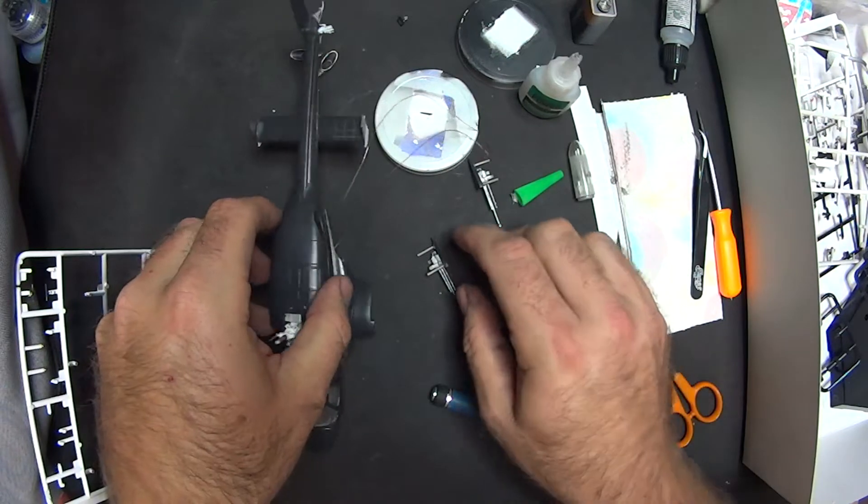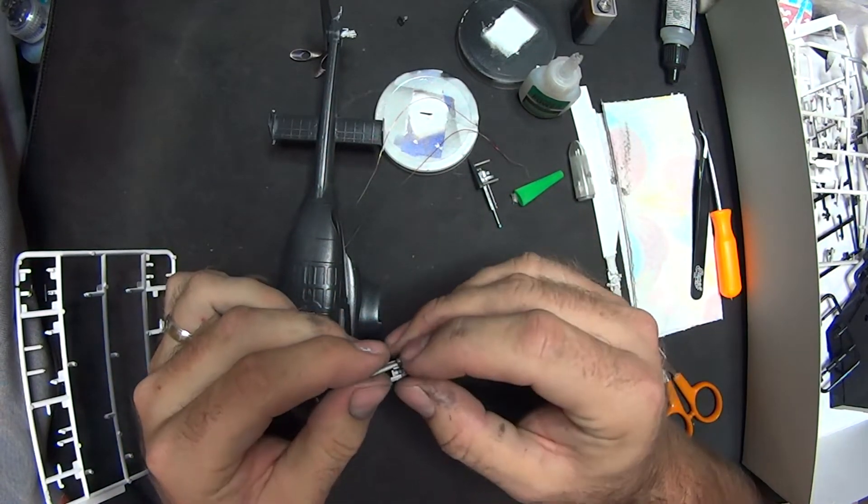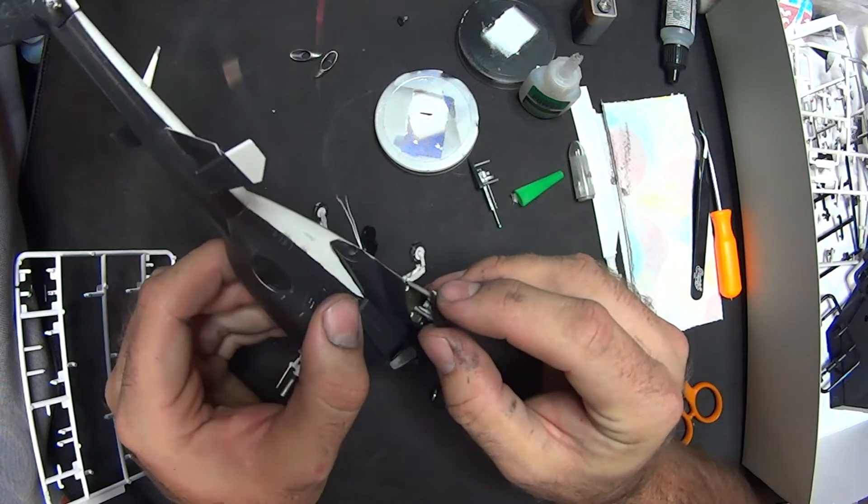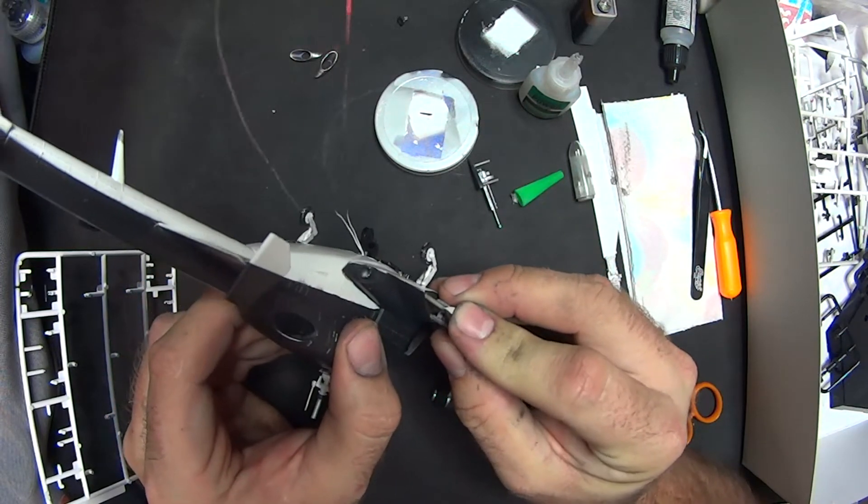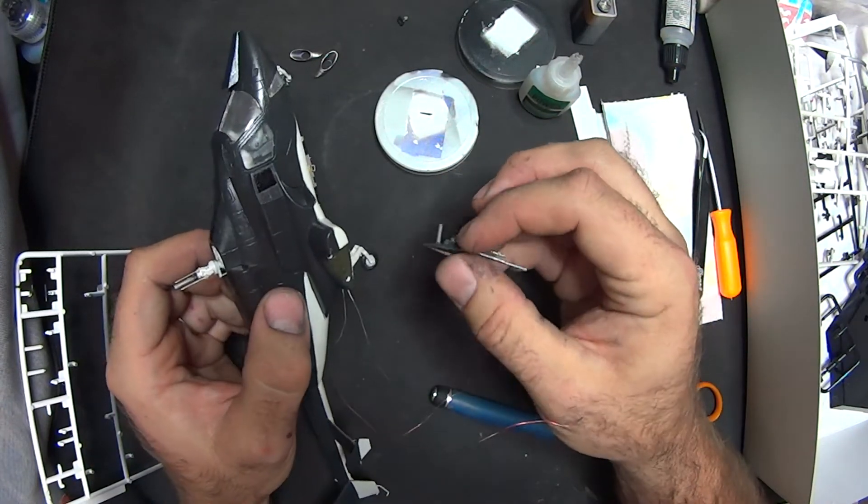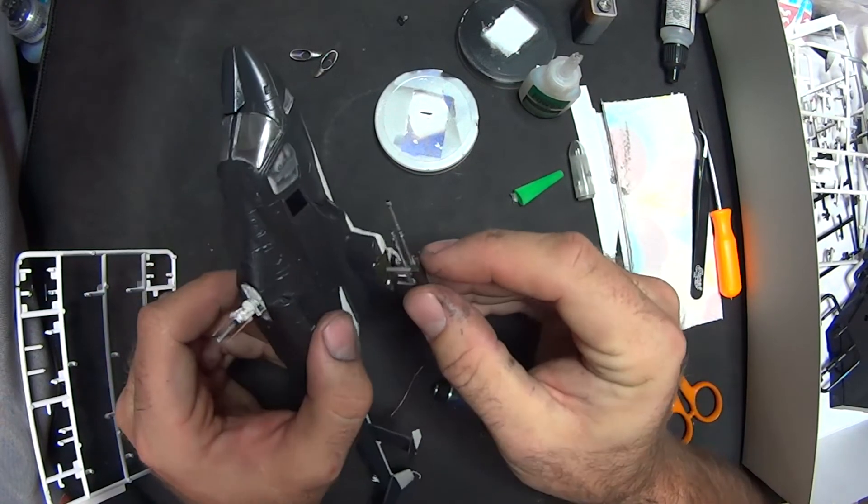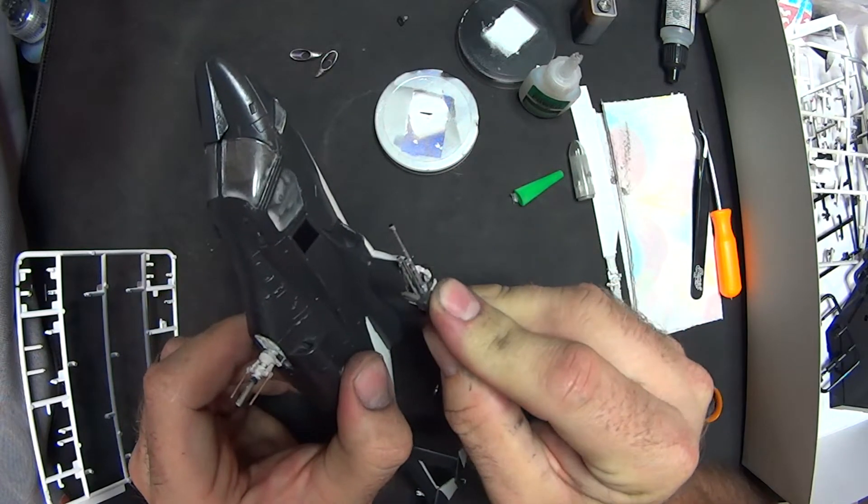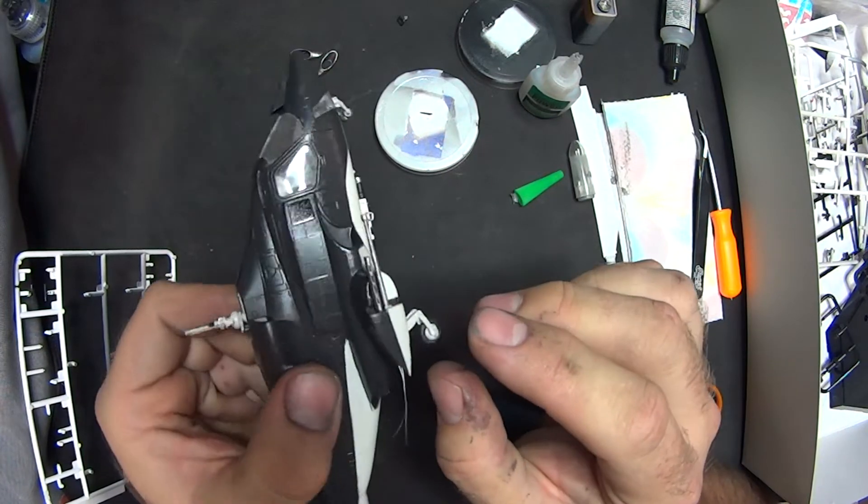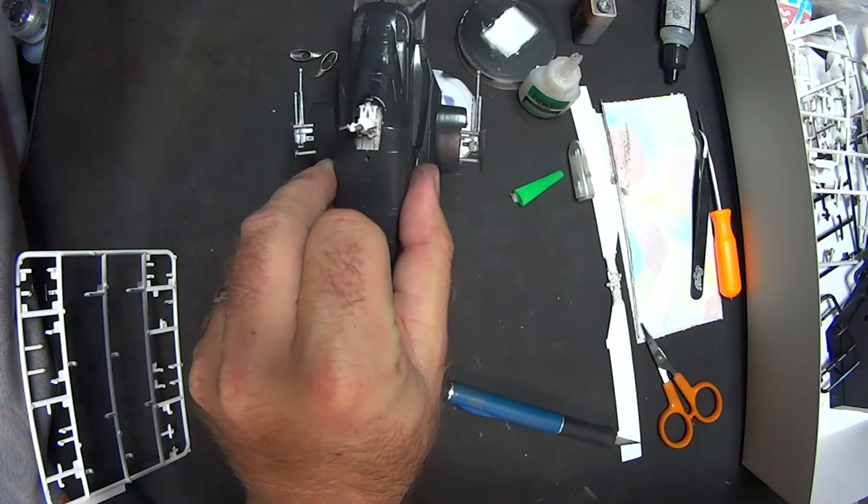So looking good, got all that on. The machine guns, I'm not going to cement in place yet. I'm going to do a little bit of touch-up on these, but I will stick them in place just so you kind of get an idea of how these are going to sit on here. These pegs just kind of push into place. You don't really have to cement these in place. They'll sit in there pretty nicely just by being a press fit.